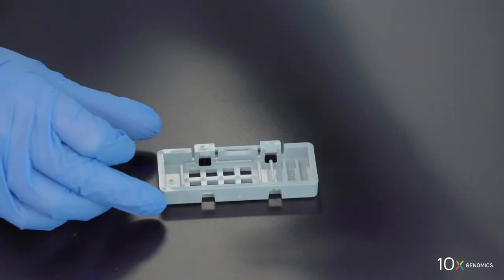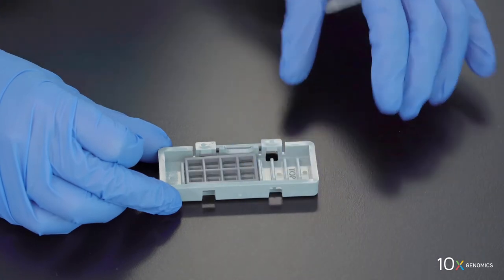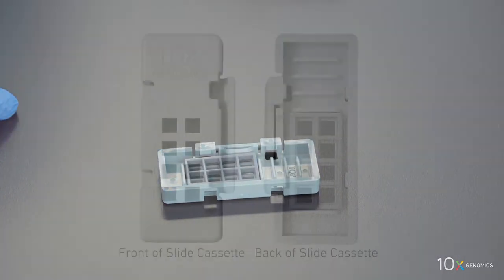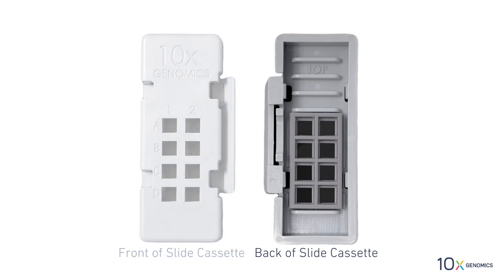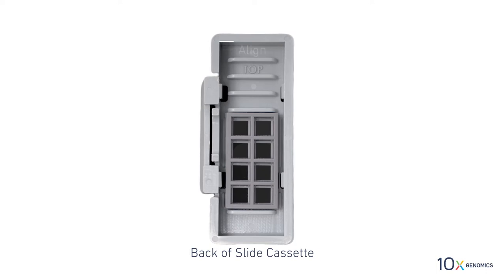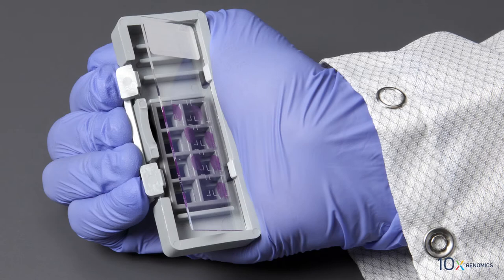Insert the gasket and align the gasket and slide cassette cutouts. Ensure that the back of the slide cassette is facing the user prior to assembly. Align the label on top of the slide to the top of the slide cassette. The active surface of the slide with tissue sections will be faced down such that the slide label is no longer readable.